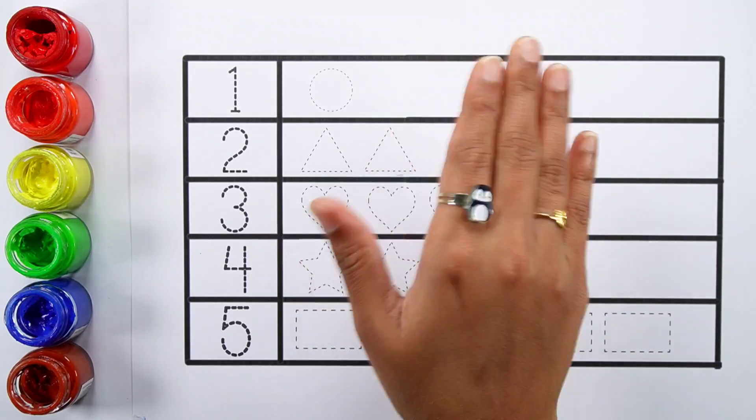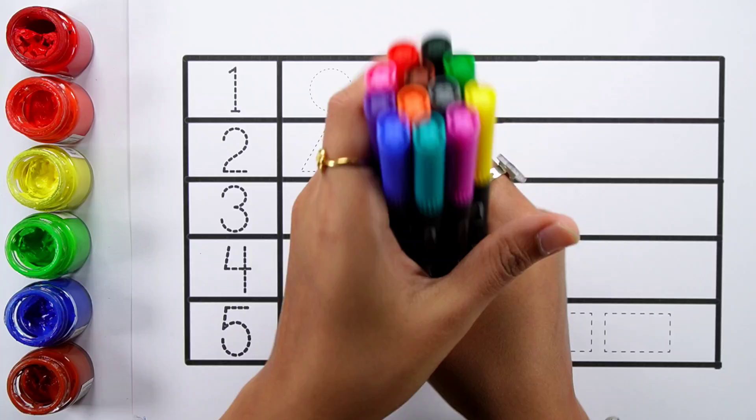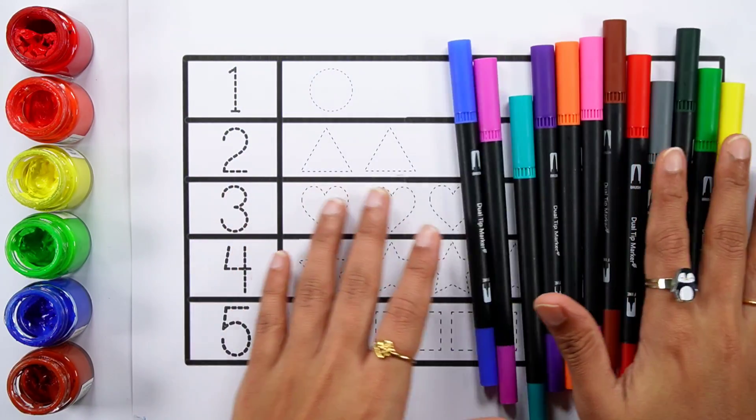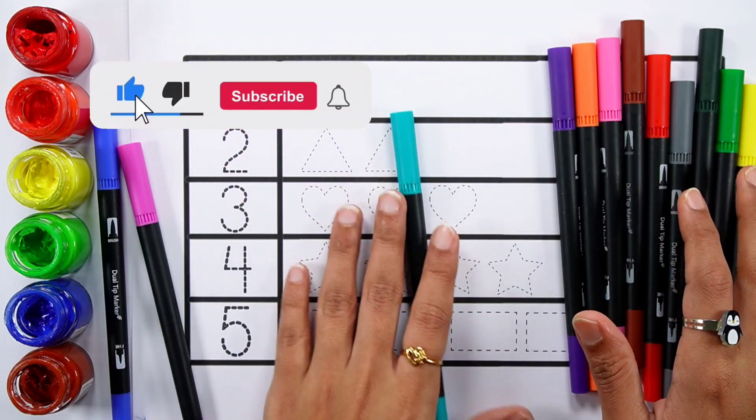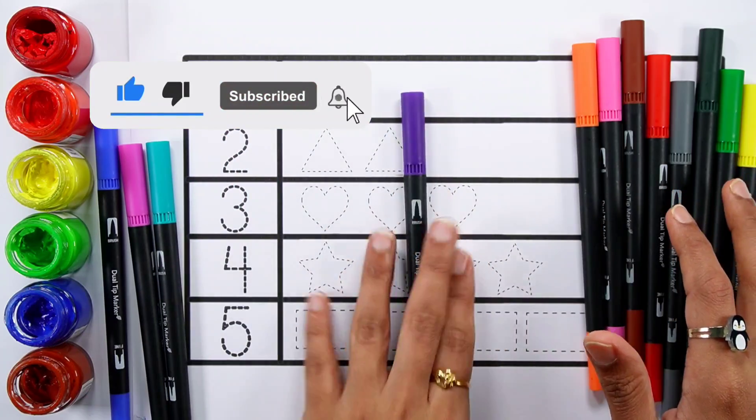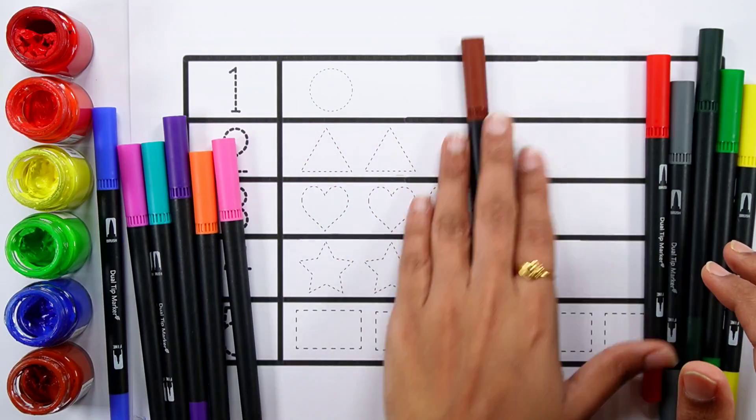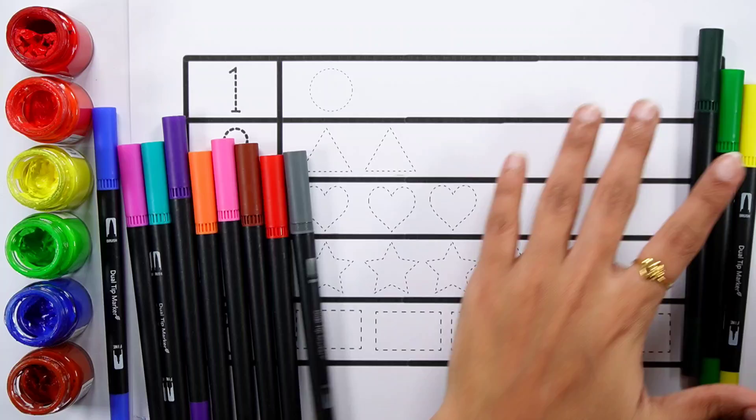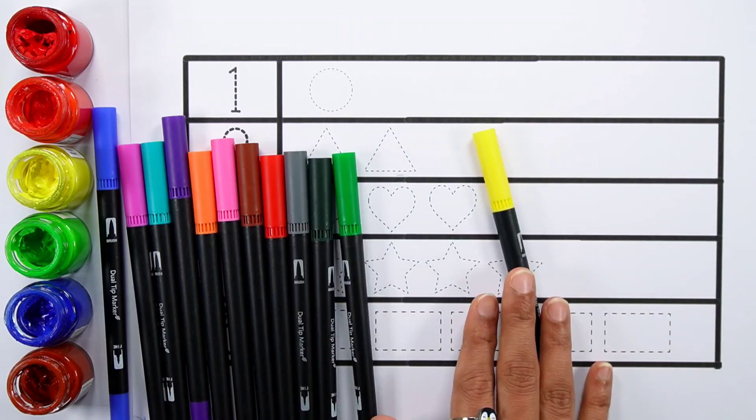Hello guys. Let's learn some colors. Blue color, purple color, pico green color, violet color, orange color, pink color, brown color, red color, gray color, dark green color, light green color, yellow color.